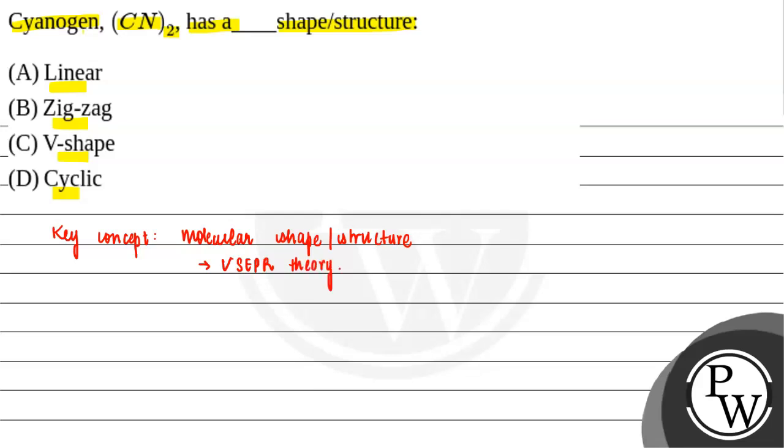Now let us start solving this question. If we talk about cyanogen, its molecular formula is CN₂. We can see that C is a carbon atom connected with nitrogen using—sorry—using 3 bonds.